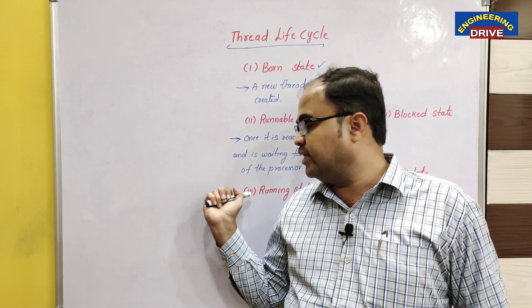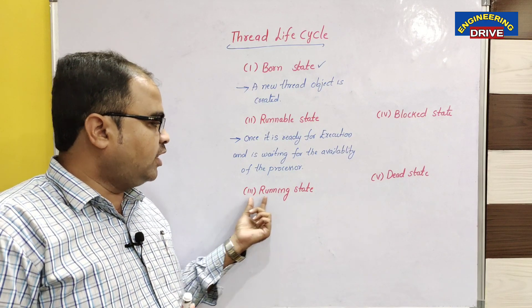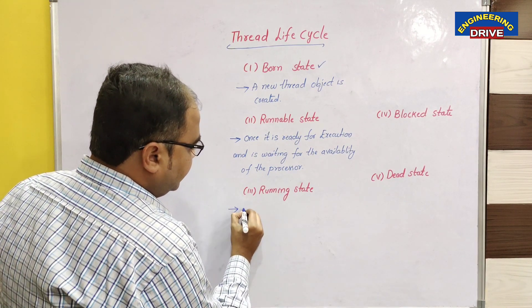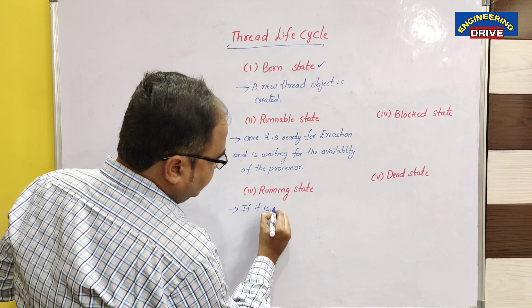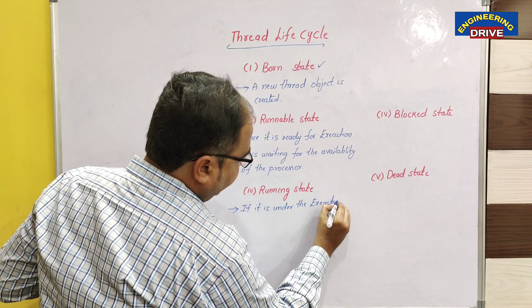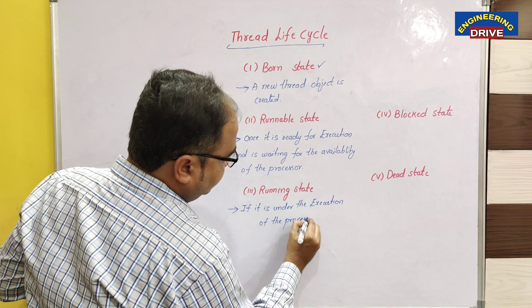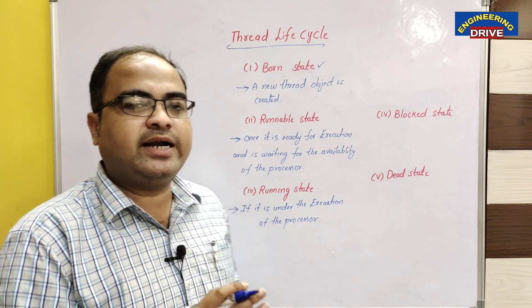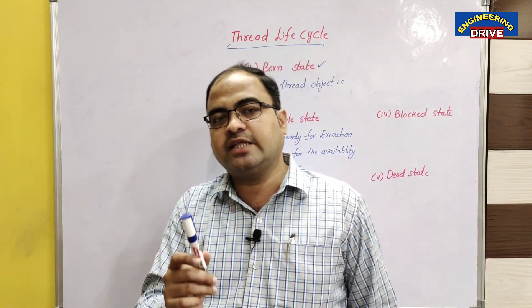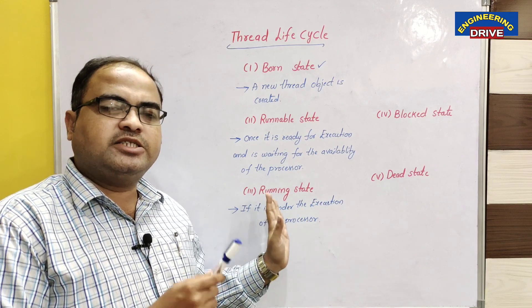Then comes the third state, which is the main state for the execution of a thread. In this state, the thread starts its execution — we call this state the running state. A thread enters into running state if it is currently being executed by the processor. This is the third state of a thread's life cycle. The thread will be executing and doing its work.